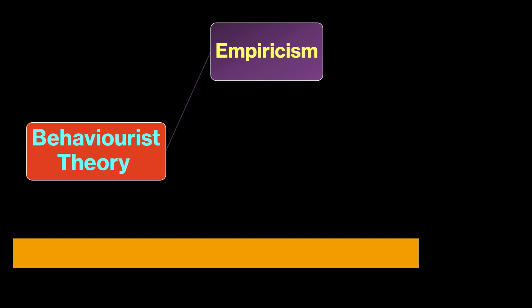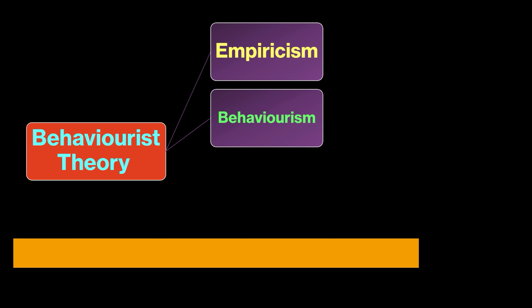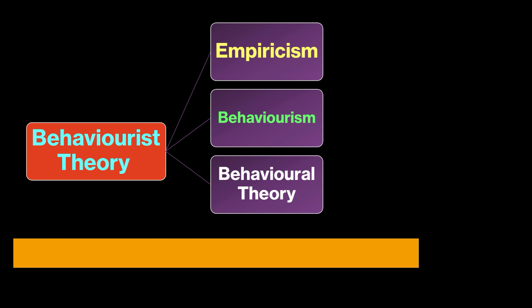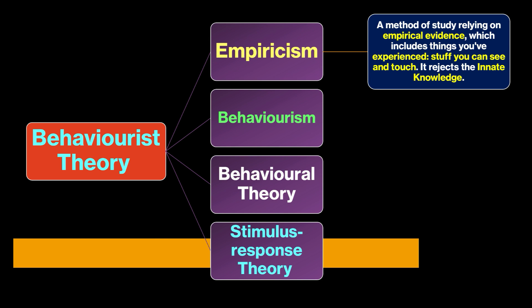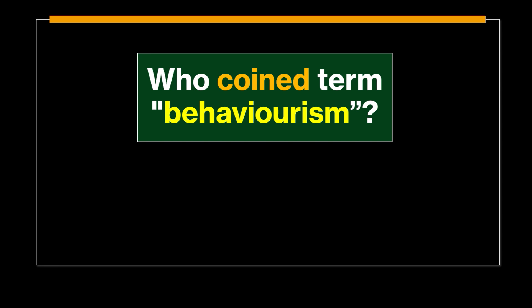Behaviorist theory is also known as empiricism, or behavioral theory, and sometimes we also call it a stimulus-response theory. Empiricism refers to a method of study relying on empirical evidence, which includes things you have experienced — stuff you can see and touch. It rejects innate knowledge.